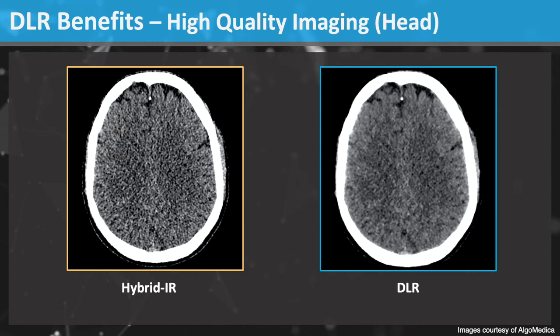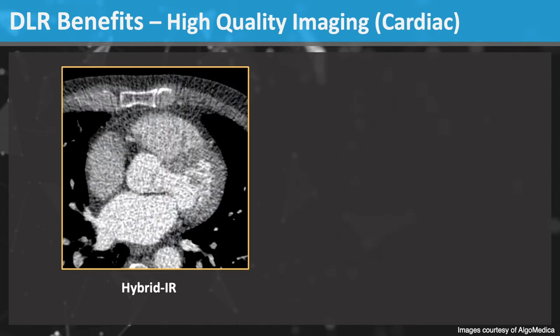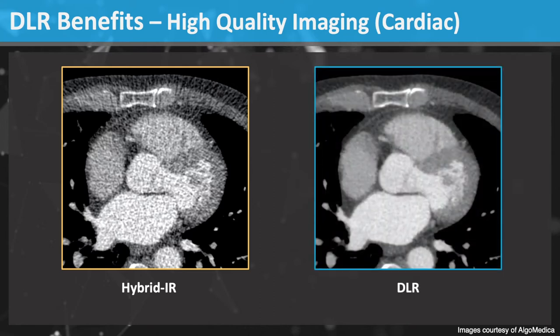We can now see the gray-white junction better, which is critical for stroke detection. This cardiac CT has high image noise despite using iterative reconstruction. DLR improves the contrast to noise ratio and markedly improves image quality. It's much easier to detect a cardiac abnormality on these high quality images.